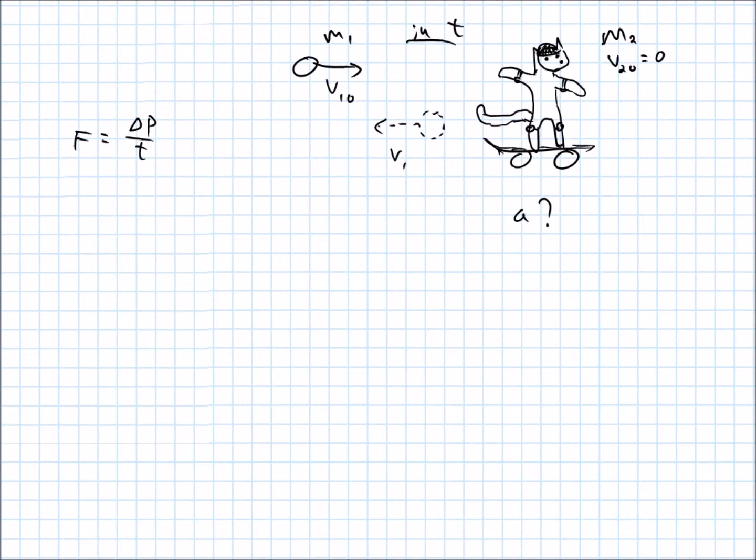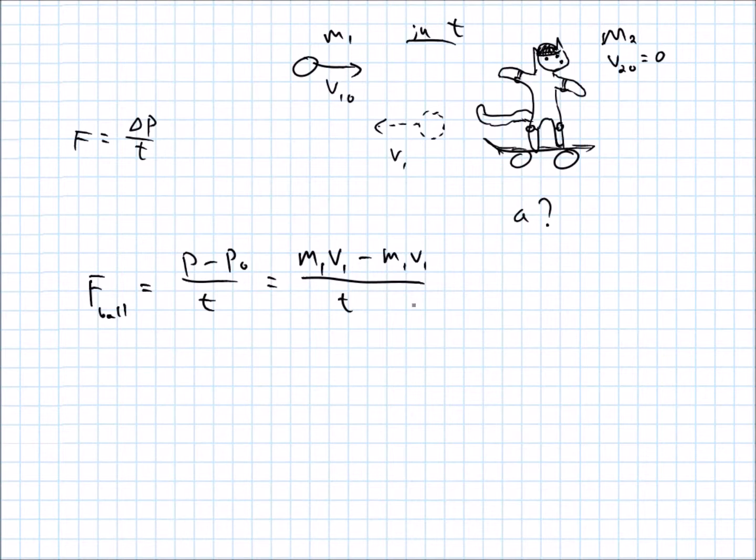Okay, so we can find the force on the ball. All right, the force on the ball is going to be equal to the change in momentum of the ball. So that's final minus initial, divided by the time. And so final minus initial is going to be M1V1 final minus M1V1 initial, all over time. And if I'm inclined, I could factor out that M1, M1 over T, V1 final minus V1 initial.